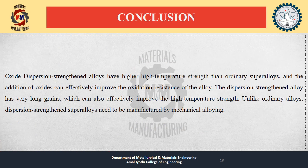In conclusion, ODS (Oxide Dispersion Strengthened) alloys have higher temperature strength than ordinary superalloys, and the addition of oxide can effectively improve the oxidation resistance of the alloys. Dispersion strengthened alloys have very long grains which can also effectively improve high-temperature strength. Unlike ordinary alloys, dispersion strengthened superalloys need to be manufactured by mechanical alloying. ODS alloys are super-strong, have greater resistance to fracture, and are highly resistant to oxidation.